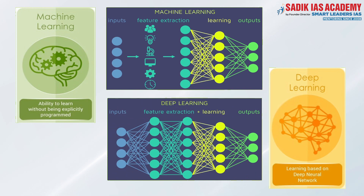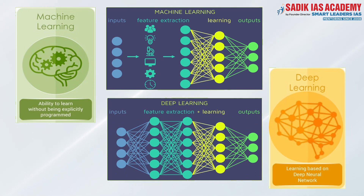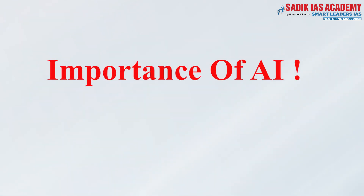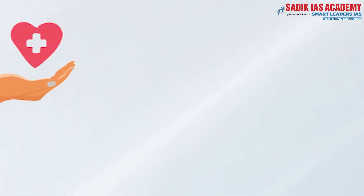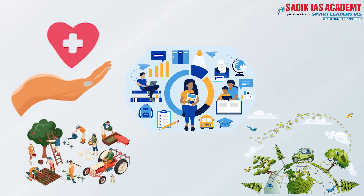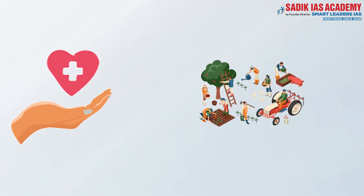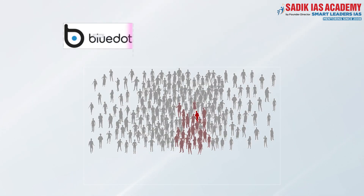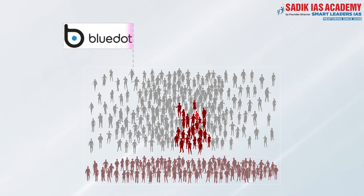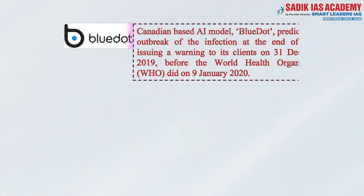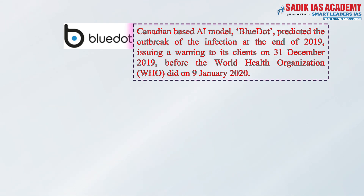Artificial intelligence is not only about creating algorithms and machines that sophisticate the lives of humans, but also about its use in important sectors like health, education, environment, and agriculture. In order to highlight the inevitableness of artificial intelligence, let me bring to your notice recent applications in health and agriculture. The first is about Canadian software company BlueDot, which maps the spread of infectious diseases. The AI-based model of BlueDot predicted the outbreak of COVID-19 in China at the end of 2019, before the WHO did.